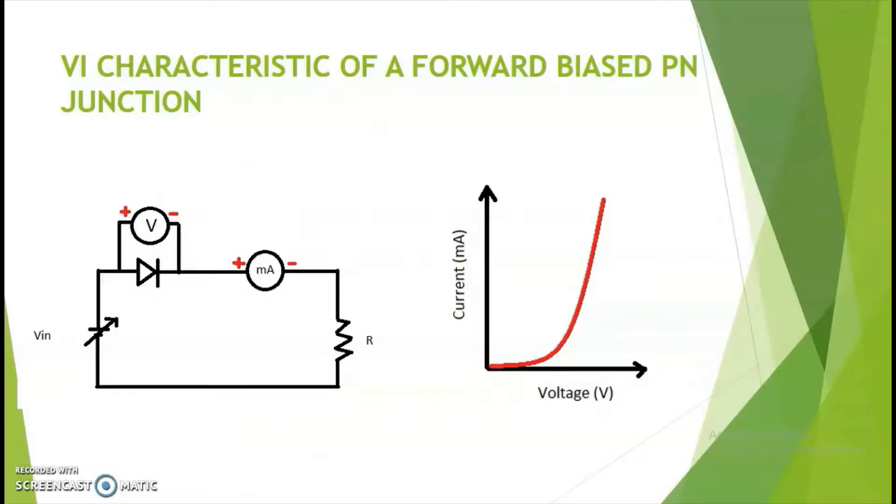We should know how a diode behaves and for this, we need to draw a graph or characteristic. In order to plot the characteristic of a diode, we have an experimental setup as shown here. The diode is forward biased using this supply and a voltmeter and milli-ammeter is used for displaying the values of voltage and current.